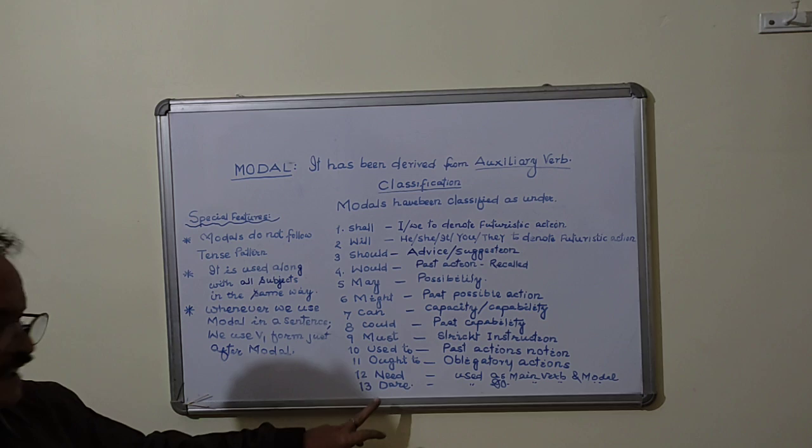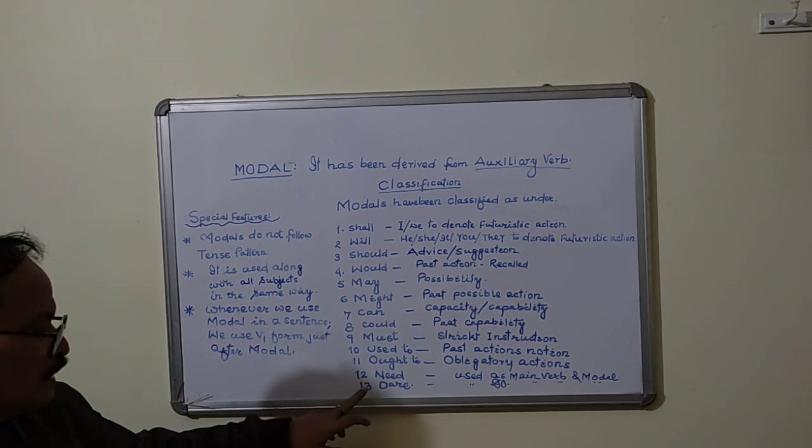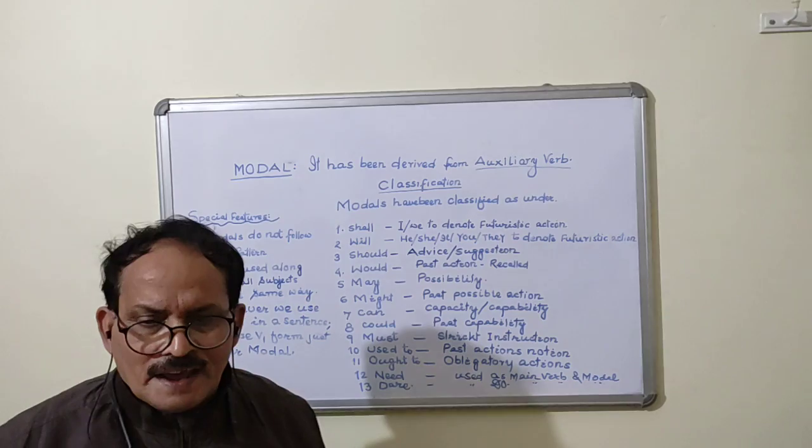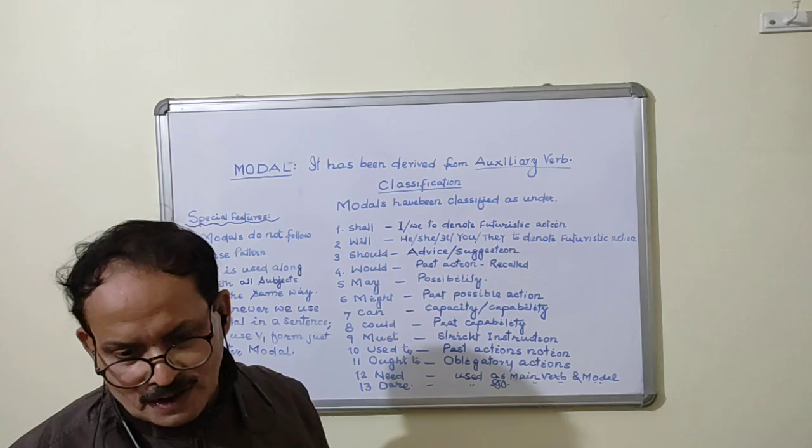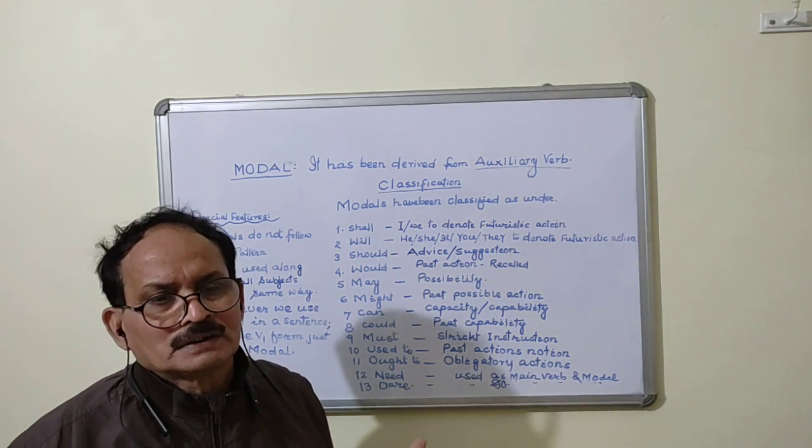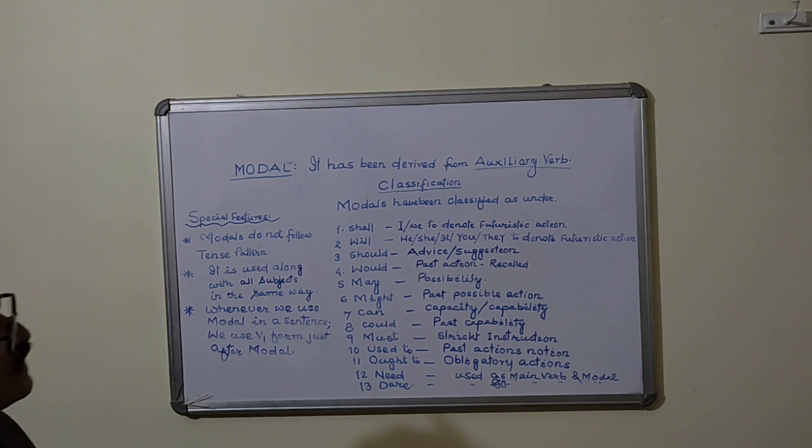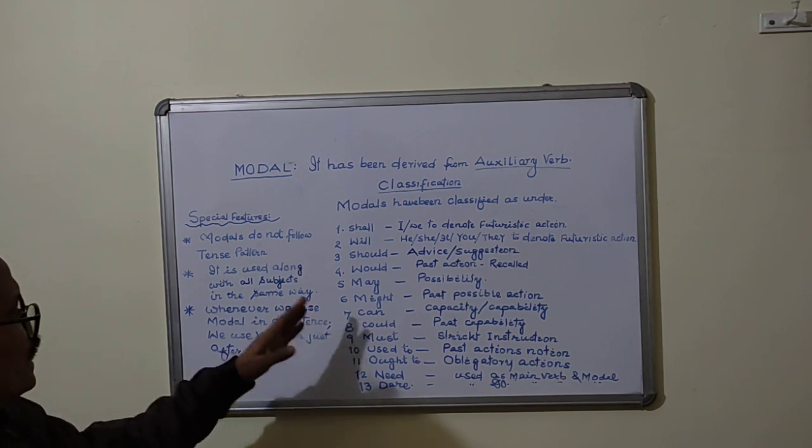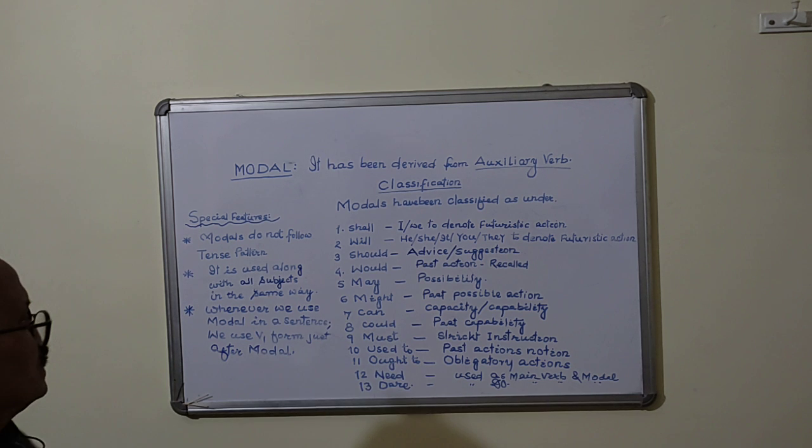In the similar way, dare. How did you dare to go there? It is used as verb. He dare not to go there. It is used as model. In this way, we come to know the uses of all the models which have been mentioned here.